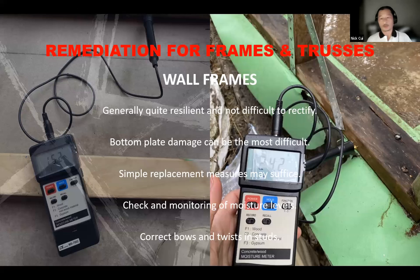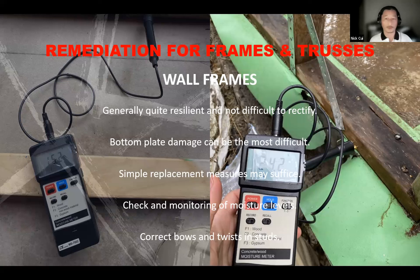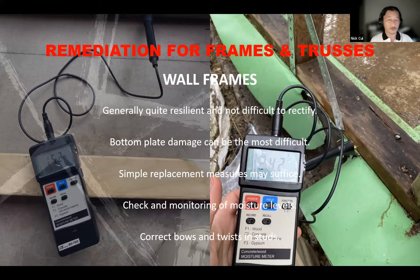For wall frames, remediation generally involves simple replacement of studs, lintels, or noggins. In more involved cases, bottom plate removal and replacement is required, which means supporting the wall frame while the bottom plate is removed — a difficult but manageable task. The key first step is always to allow the frame to dry out naturally, or use mechanical ventilation, before commencing any rectification or remediation.